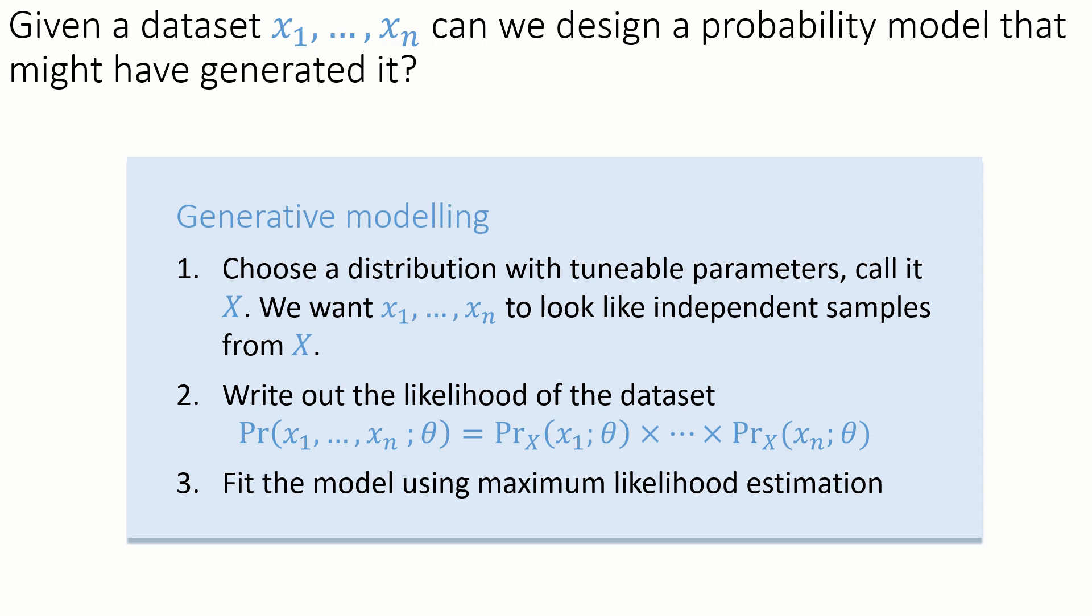We write out the likelihood of the dataset. The likelihood of the entire dataset is just the product of the likelihoods of each individual item, because we're assuming independence. Then we fit this model using maximum likelihood estimation, and that gives us an estimate for theta, our fitted probability model.